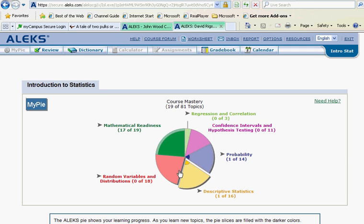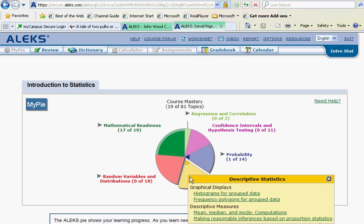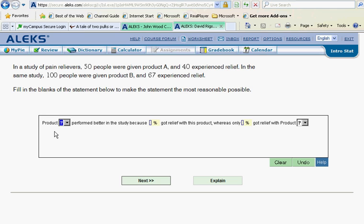Continuing to work in the yellow slice, we'll be looking at making reasonable inferences based on proportion statistics. In a study of pain relievers, 50 people were given product A and 40 experienced relief. In the same study, 100 people were given product B and 67 experienced relief.